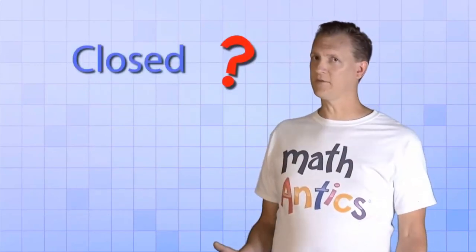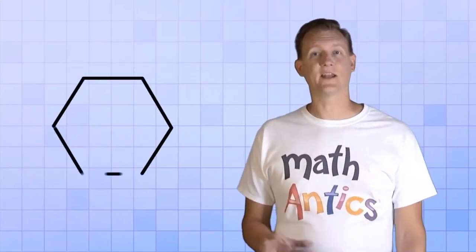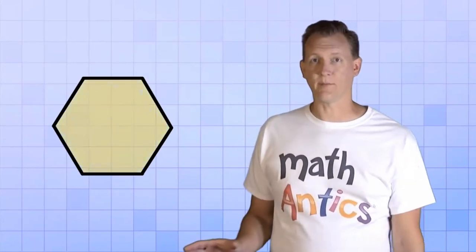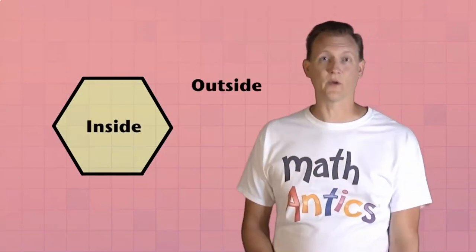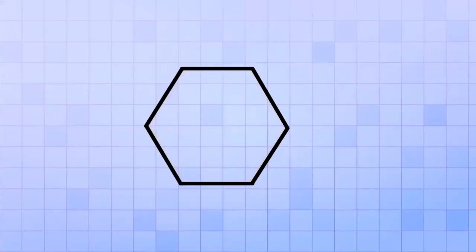The next thing we need to know about polygons is that they're closed shapes. What does it mean for a shape to be closed? It means the sides are connected so there are no gaps — the area inside is separated from the area outside, and there's no way to get from inside to outside without crossing a line. It might help to think of a closed shape like a cage.